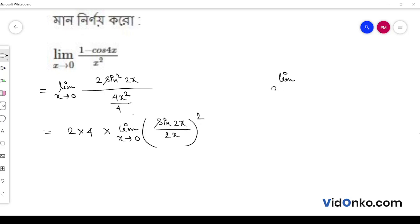Now we know limit x tends to 0, sin x by x. This is equal to 1. Then 8 into 1 is equal to 8.